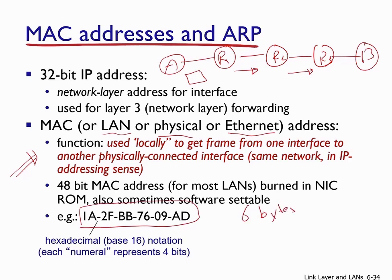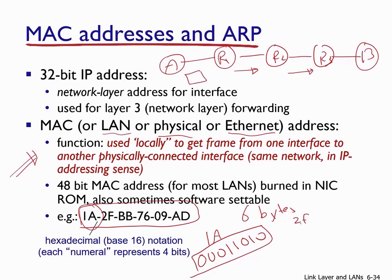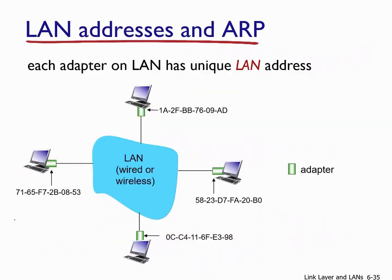The MAC address is represented in hexadecimal notation where each byte is represented using two hex digits. To convert from hexadecimal to binary, we convert each hex digit into a 4-bit binary value. For example, the first byte 1A is converted by converting 1 to 0001 and A to 1010, giving the binary format of the first byte. The second byte 2F is converted by converting 2 to 0010 and F to 1111, obtaining the binary representation of the second byte, and so on.